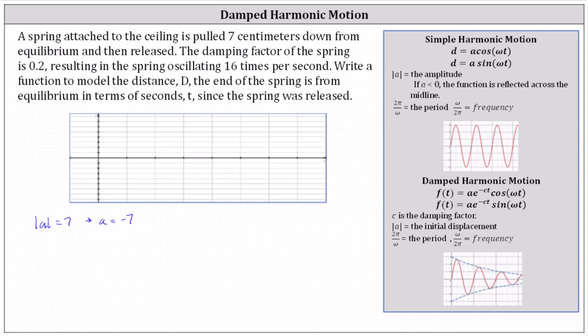The damping factor of the spring is 0.2, which indicates c equals 0.2. The spring oscillates 16 cycles per second, which is the frequency, which also indicates the period equals the reciprocal, 1/16th.